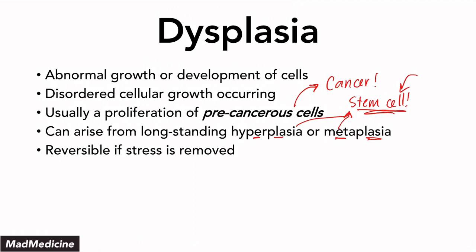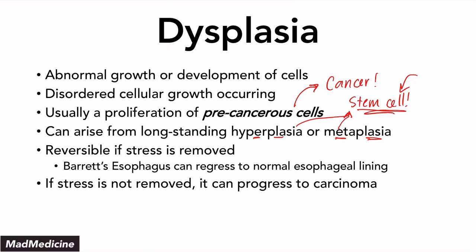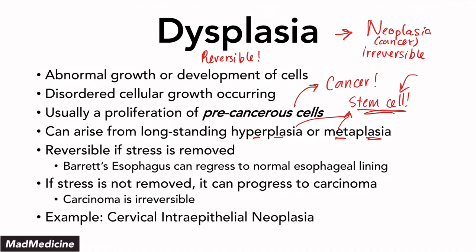Dysplasia is still removable, similar to metaplasia, especially if the stress is removed. An example of dysplasia would be Barrett's esophagus, which can regress to the normal esophageal lining if you remove the stress. But if you don't remove the stress, it can progress to carcinoma. Carcinoma is the irreversible state. Once this progresses from dysplasia to a neoplasia or cancer, it is irreversible at the cellular level on its own. One example of this progression is cervical intraepithelial neoplasia, also known as CIN.